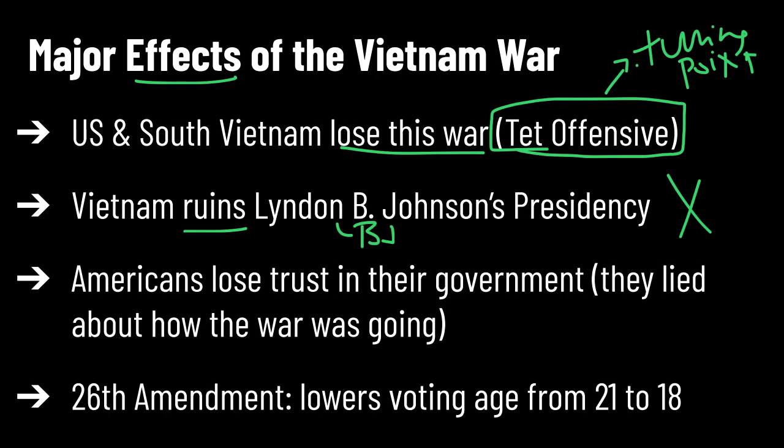We also see a major loss of trust in our government because they lied — they lied about how the war was going, and they lied about the start of the war and why we got into it. We're going to see a period in the 70s where we're not really believing what's coming out of our politicians' mouths. It's pretty similar to what's going on today — we don't have a lot of trust in those people.